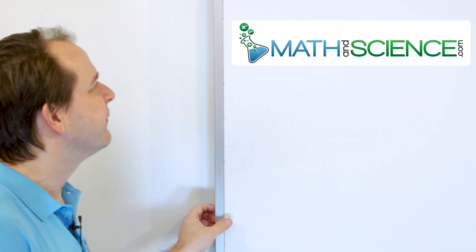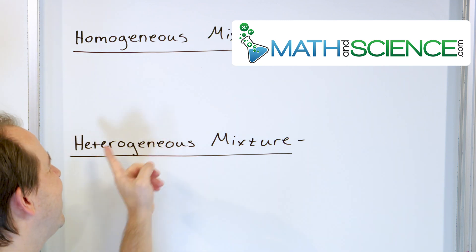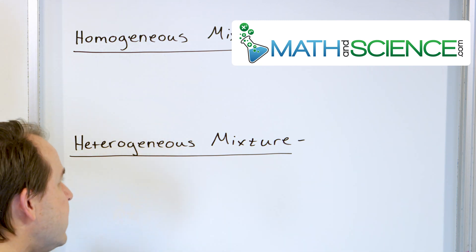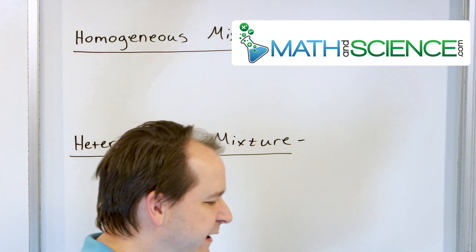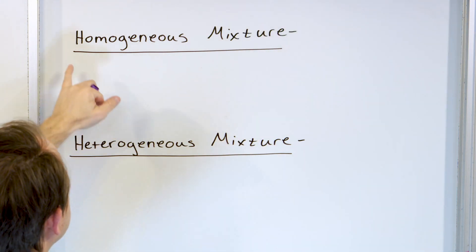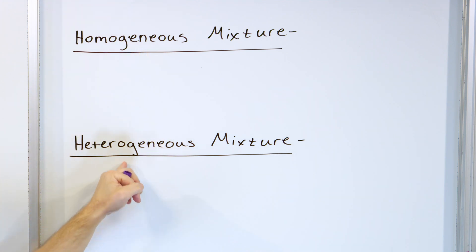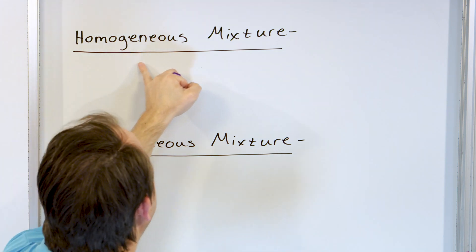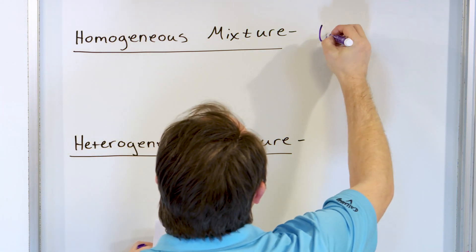There are two main kinds of mixtures: the homogeneous mixture and the heterogeneous mixture. Homo means the same and hetero means different. So when you have a homogeneous mixture, all it means is the mixture is uniform.